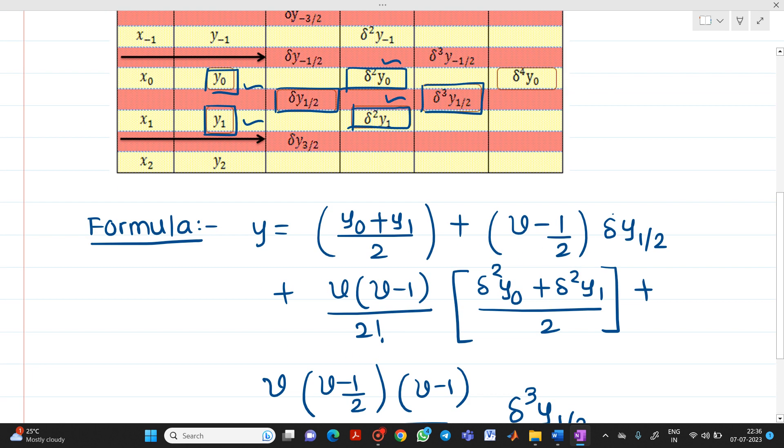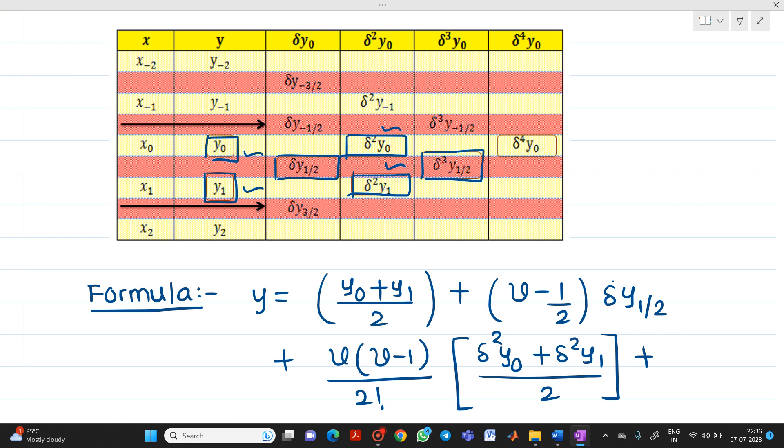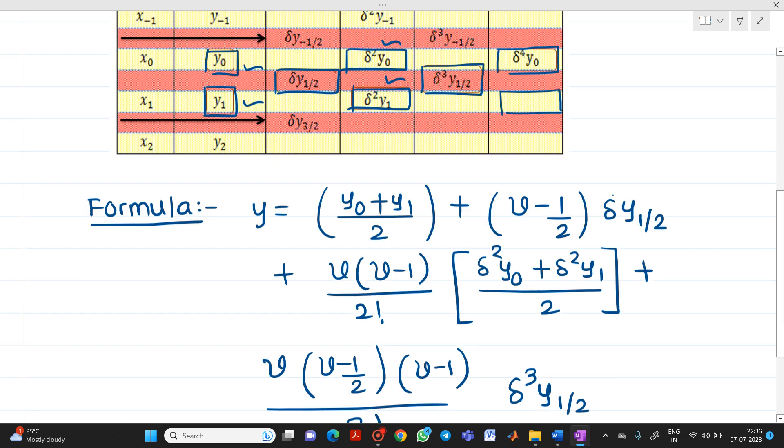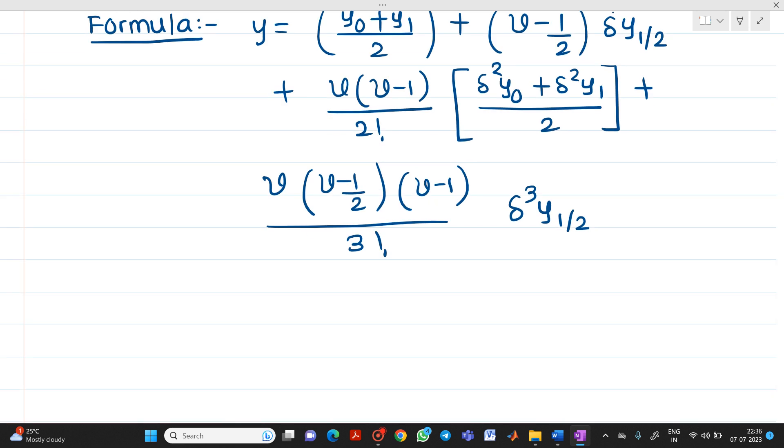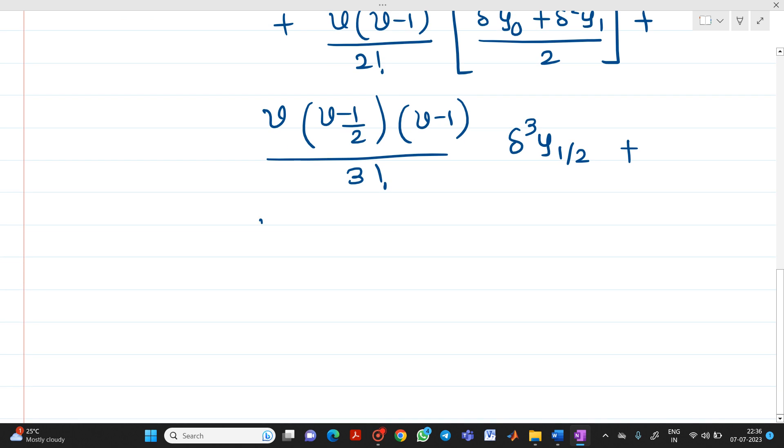So, it will be v into v minus 1 by 2 upon 3 factorial del cube of y1 by 2. Now, here if you see in this table we have only up to this value. But if we have these two values and no value here, if we have two values then we can write the next term which will be equal to v plus 1, v, v minus 1, v minus 2 whole divided by 4 factorial and here it will be del to the 4 y0 plus del to the 4 y1 divided by 2.